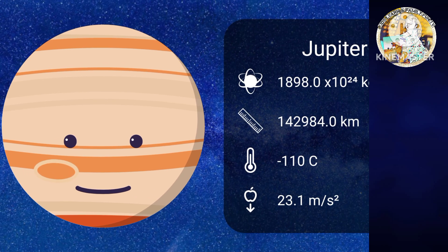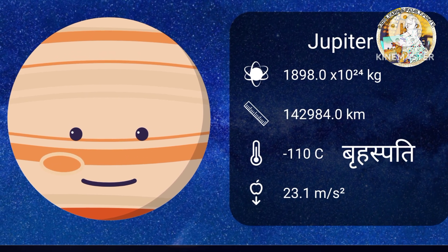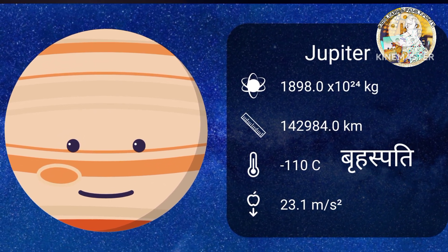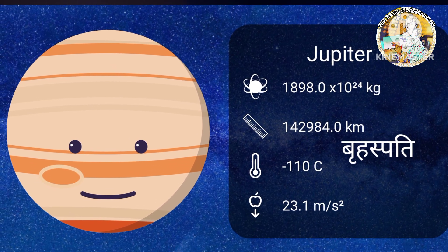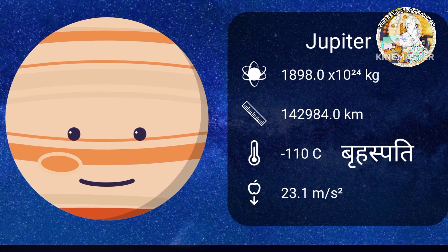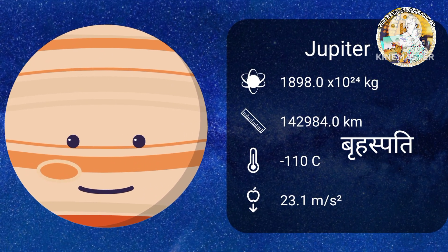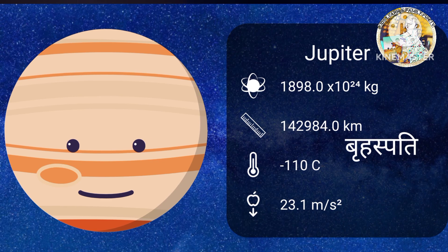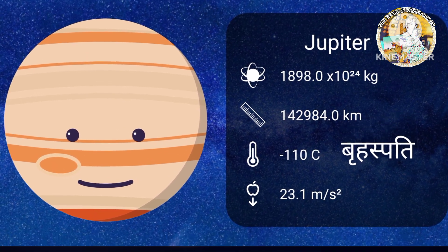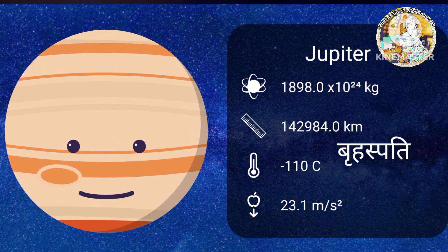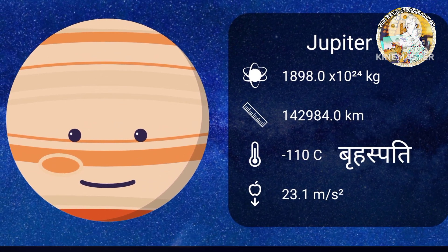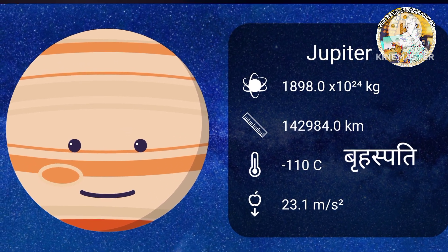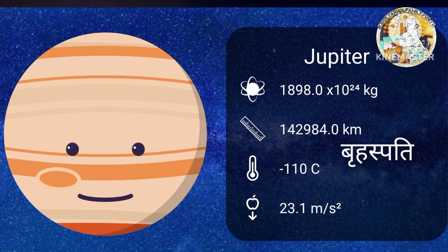Jupiter. J-U-P-I-T-E-R. Brihaspati. Jupiter is the fifth planet from the sun and is by far the largest planet in the solar system.